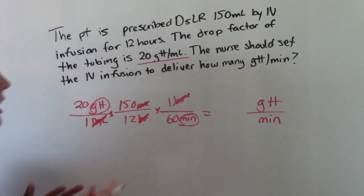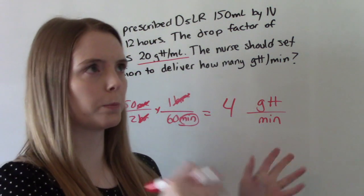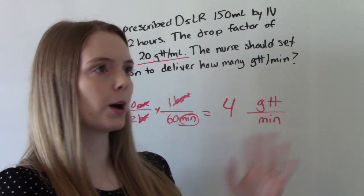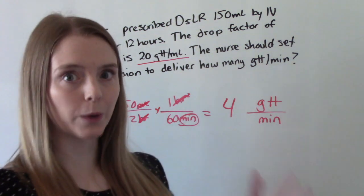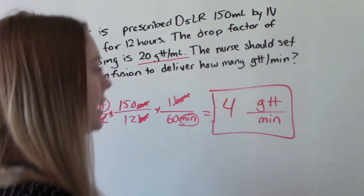So punch it in your calculator. Do the math. And you get 4. You actually get like 4.1, etc. But we don't do that with drops, right? So we round it. So our answer is 4 drops per minute.